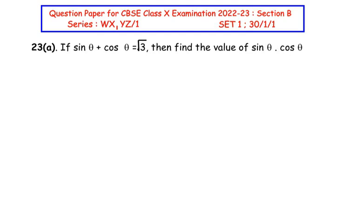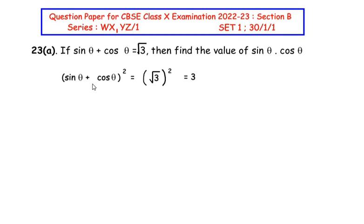To begin with, let us square both sides of the equation. So we get sin theta plus cos theta, the whole square, is equal to square root of 3, the whole square, which is equal to 3. Now when we square the square root, the square root disappears, so we are left with only 3.